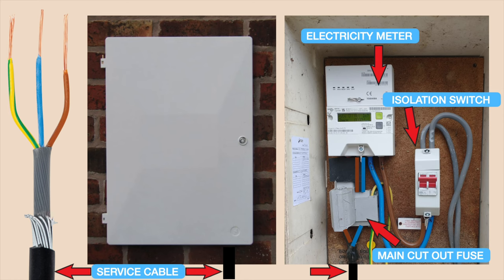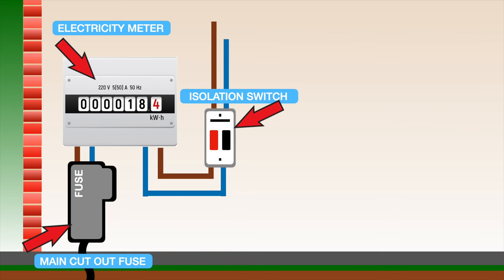On the left-hand side of the screen that's generally what a service cable will look like, and then the left picture shows what a meter box looks like from the outside and the right picture shows what a meter box looks like when it's opened up. The electricity comes in through the service cable at the bottom. It then goes through the main cutout fuse, which is usually either 60 or 100 amps, and this is in place to ensure only a set amount of current can go into the property. It then goes through the electricity meter which calculates the amount of energy being used, and then through the main isolation switch before making its way to the consumer unit.